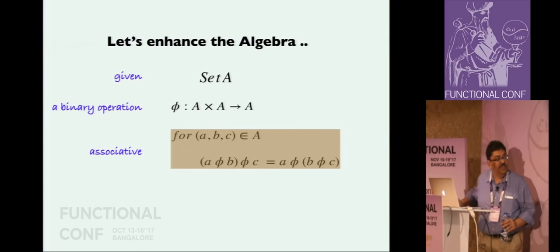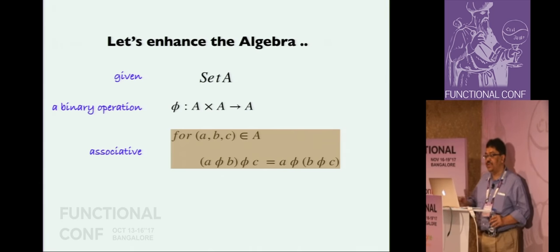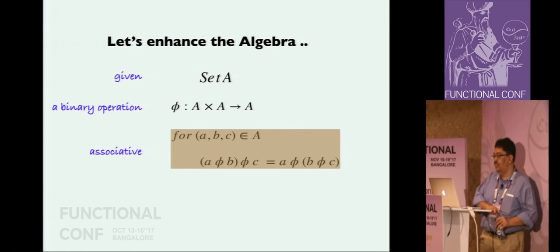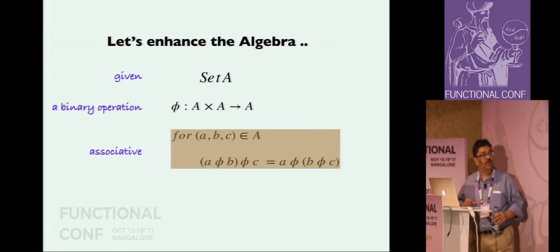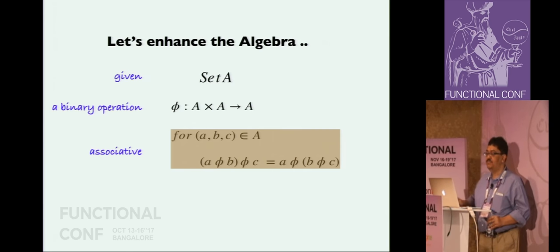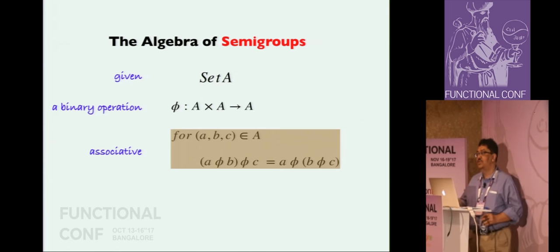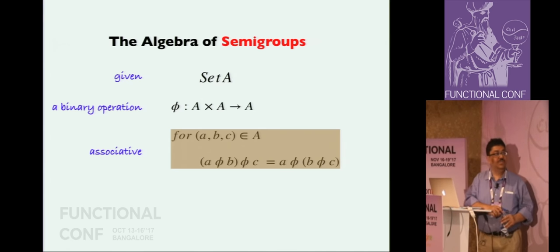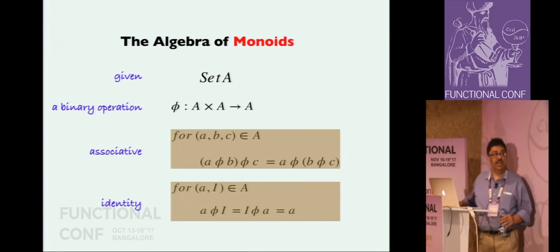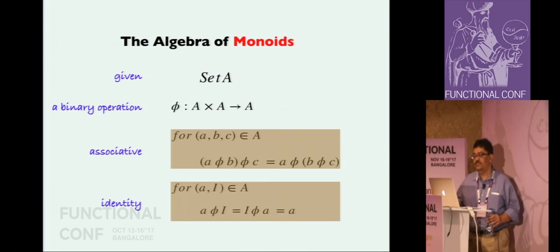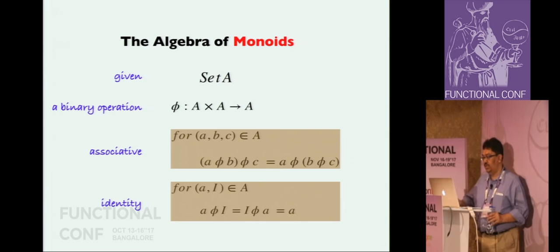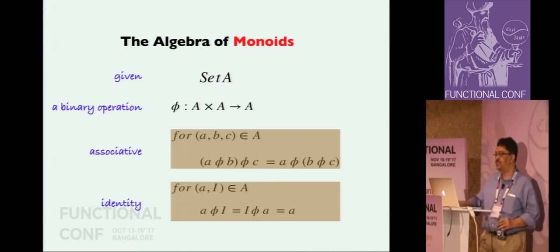Let us enhance our original algebra with these constraints. We bring in the associativity constraint and say the binary operation has to be associative. Anyone have any idea what this algebra can be called? This is the algebra of semi-groups - we define a semi-group as having a set and an associative binary operation. We can further refine this algebra by adding the identity operation, and this algebra becomes the algebra of monoids. Now the question is how do we encode this algebra in our code?